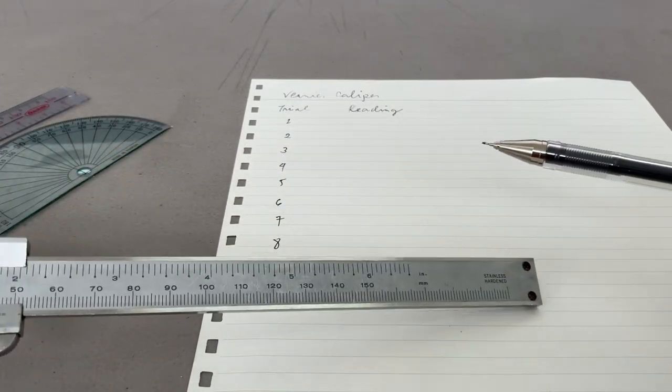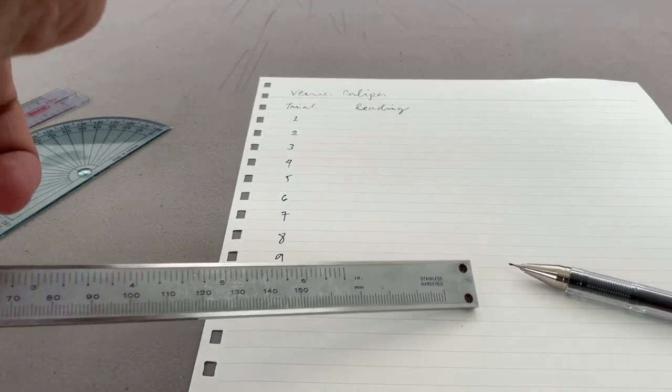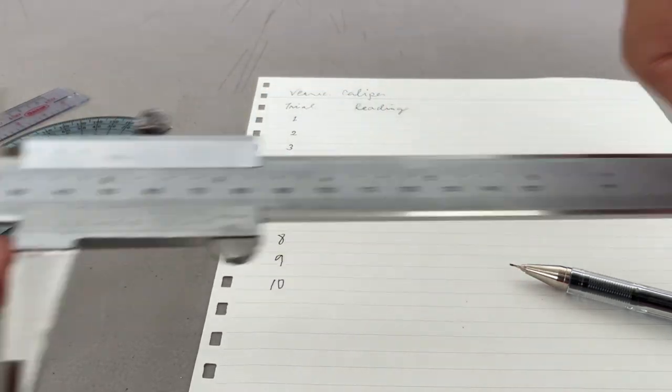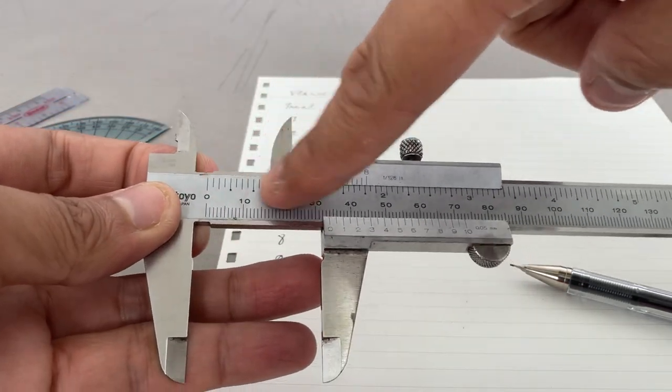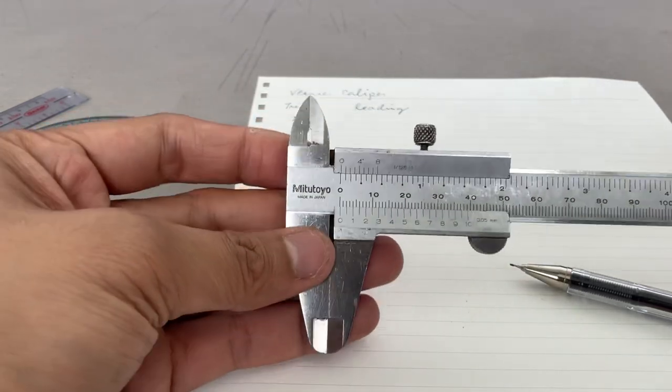There's also a depth gauge here. So if you want to measure, it is used to measure the depths of a certain object. For example, a depth scale, so if this is moving, this is how you're going to read the scale.